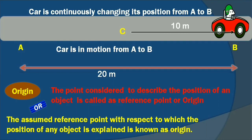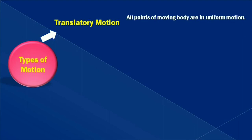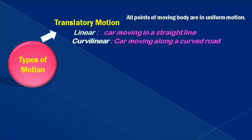Now let's see some other quantities. This is just a revision — in previous classes you might have studied the types of motion. The first type is translatory motion, which means all parts of the object are in uniform motion. Every point on a moving body moves uniformly. There are two types: linear motion, where an object moves along a straight line, and curvilinear motion, where an object moves along a curved road. Examples are shown on the screen.